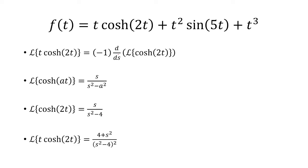Putting it together, we have negative 1 times the derivative of the Laplace transform of cosh of 2t, which is s over s squared minus 4. When you take the derivative and multiply by negative, we get 4 plus s squared over s squared minus 4 quantity squared.